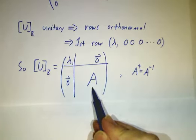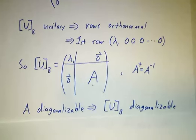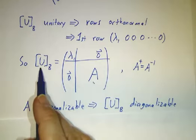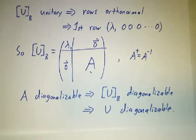So since A is diagonalizable, U in the B basis is diagonalizable. Which means that U is diagonalizable.